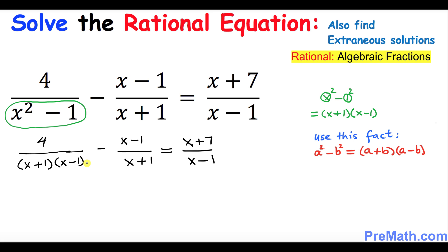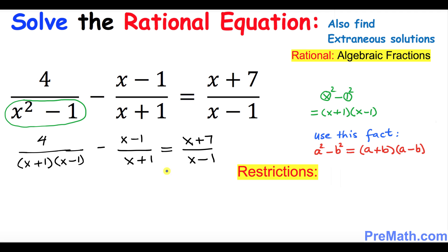Before going further, we want to look at the restrictions. If x equals negative 1, then (x+1) becomes 0, and we know that 0 must not be in the denominator. So x must not be negative 1. Similarly, looking at (x minus 1), x must not equal 1 either. So x ≠ -1 and x ≠ 1, because these values would make a zero in the denominator.